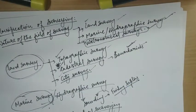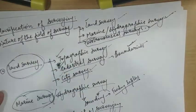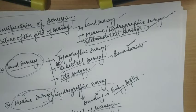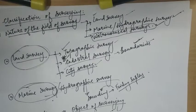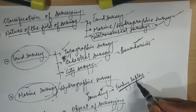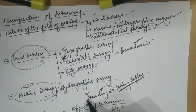City survey: surveys made in connection with the construction of streets, water supply, and sewage lines fall under this category. Coming to marine survey or hydrological survey — as the name suggests, marine or hydrographic surveys are conducted to find the depth of water at various points in bodies of water like seas, rivers, and lakes. Finding the depth of water at specified points is known as sounding — this is an important term.